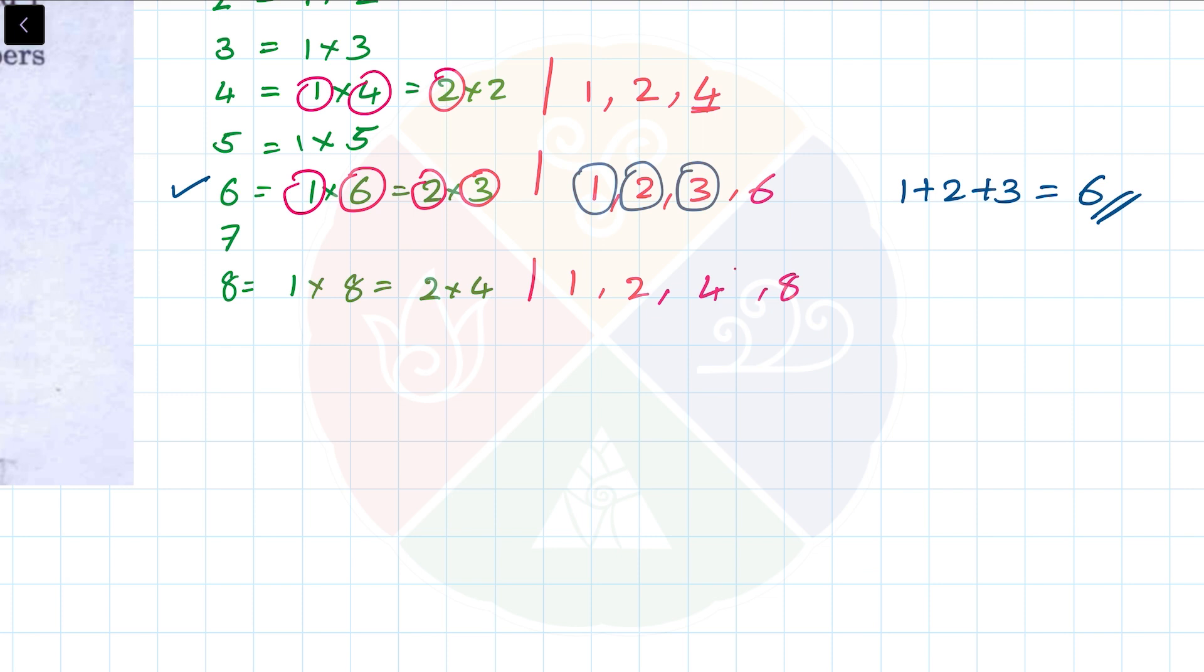Going forward, 9: 1 times 9 or 3 times 3. Here also I cannot use it, like 1 plus 3. For 10, the factors are 1 times 10 or 2 times 5. Here also we only have very limited factors: 1, 2, 5, and 10. I cannot add them to make 10. 11 is a prime number.